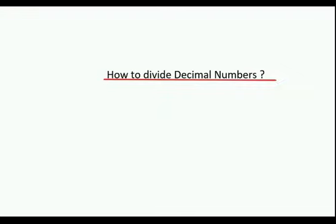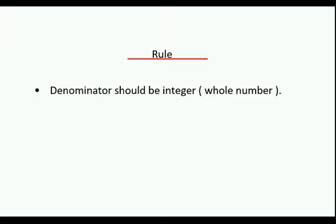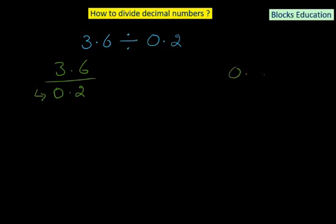How to divide decimal numbers. We have the question 3.6 divided by 0.2. There is only one rule for the division of decimal numbers: the denominator should be an integer or whole number. We can write this as 3.6 divided by 0.2, and as the rule says, this 0.2 should be an integer or whole number because it is the denominator.